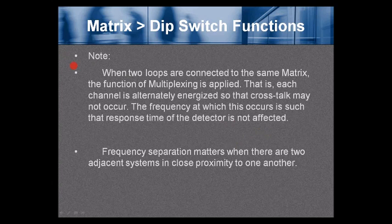Note: when two loops are connected to the same Matrix, multiplexing is applied — each channel is alternately energized so crosstalk does not occur. The response time of the detector is not affected. Frequency separation matters when there are two adjacent systems in close proximity to one another.